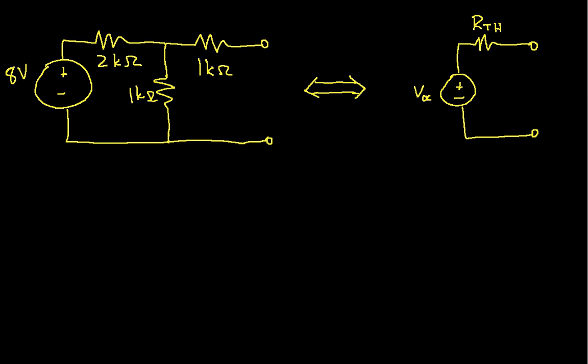We'll get started finding the open circuit voltage. The open circuit voltage is the voltage at the two terminals of the circuit without anything connected to those terminals. Looking at the circuit, we have a single loop, which is helpful. The one thing that seems a little strange is it may not be clear what to do with this 1k ohm resistor sitting here.